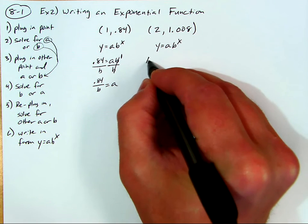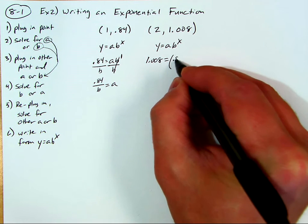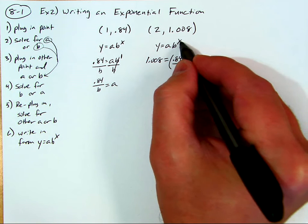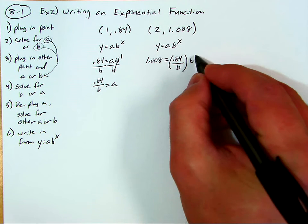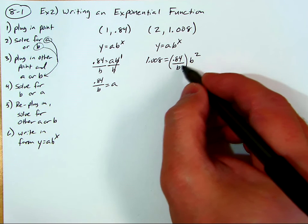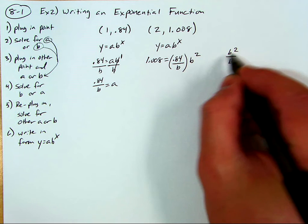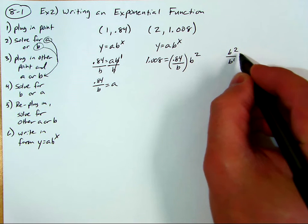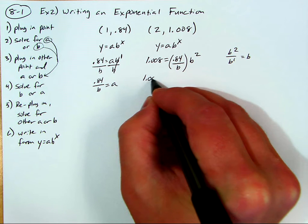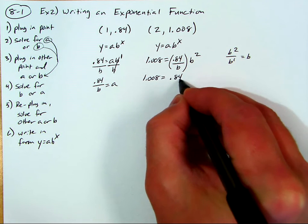y is 1.008. I know what a is, it's right here. 0.84 over b. And x right here is 2, so this becomes times b squared. And this is going to happen a lot. You're going to have to do some rules of exponents, how to cancel stuff. b squared divided by b. There's 2 on top, 1 on the bottom, 2 minus 1. It just equals a b on the top. So this becomes 1.008 on the left. And it's just times 0.84b.